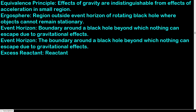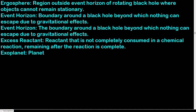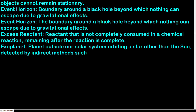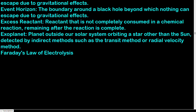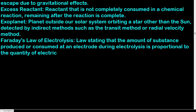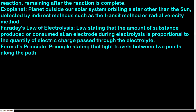Excess reactant: reactant that is not completely consumed in a chemical reaction, remaining after the reaction is complete. Exoplanet: planet outside our solar system orbiting a star other than the sun, detected by indirect methods such as the transit method or radial velocity method. Faraday's law of electrolysis: the amount of substance produced or consumed at an electrode during electrolysis is proportional to the quantity of electric charge passed. Fermat's principle: light travels between two points along the path that requires the least time, influencing the path of light through different media.